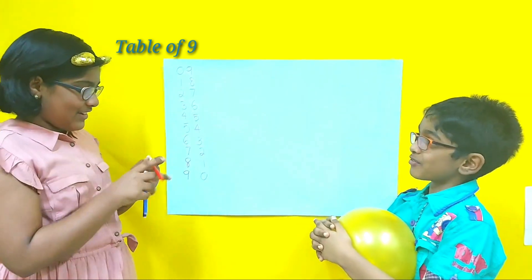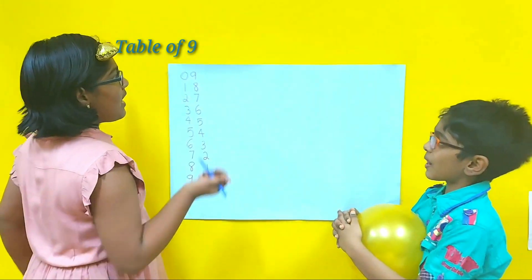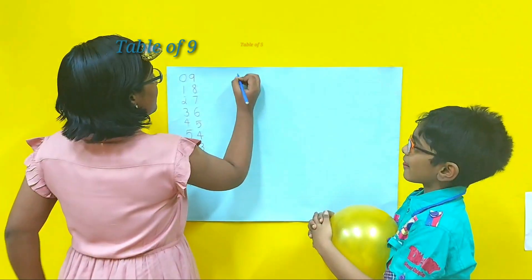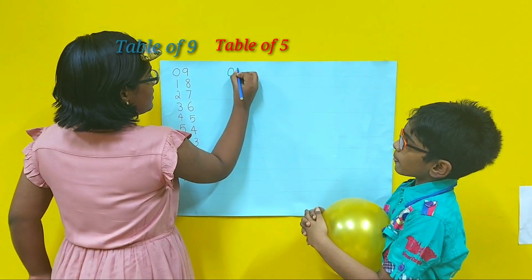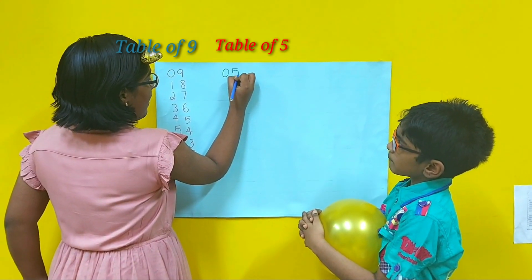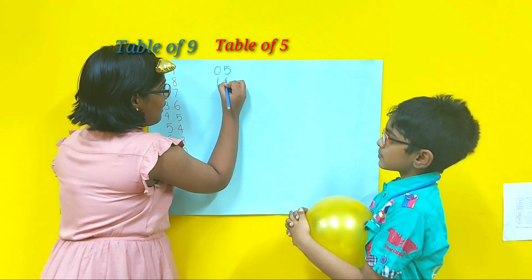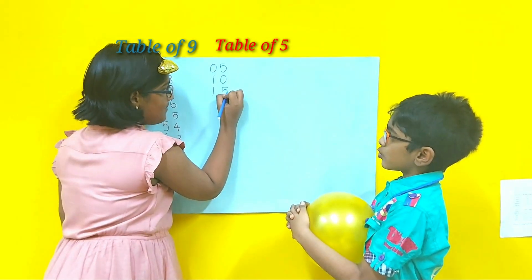So which table will we write next? 5. The 5 table is also very easy: 5, 10, 15, 20, 25, 30, 35 — only 0s and 5s. So 5 ones are 05. 5 twos are 10. 5 threes are 15. 5 fours are 20.